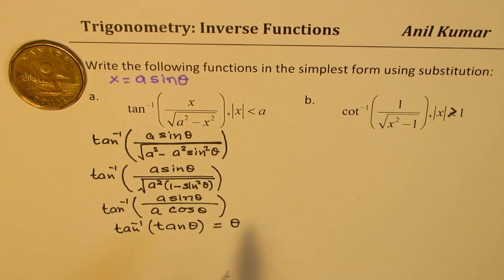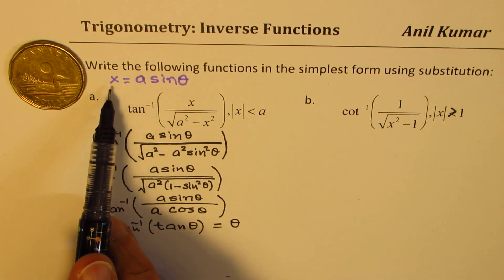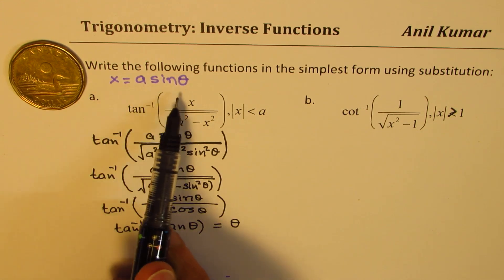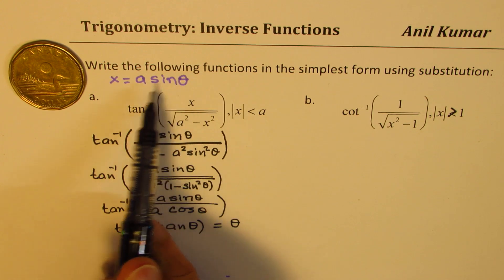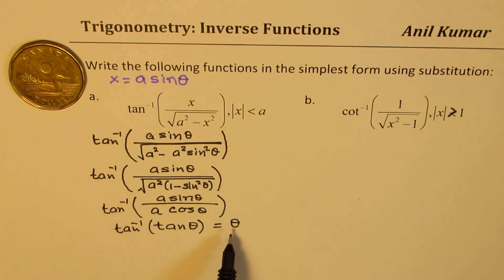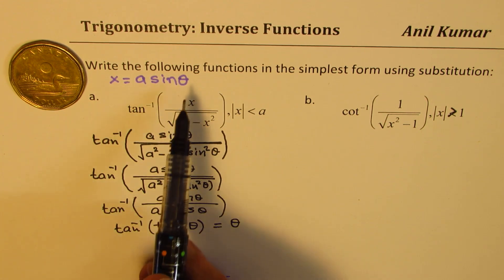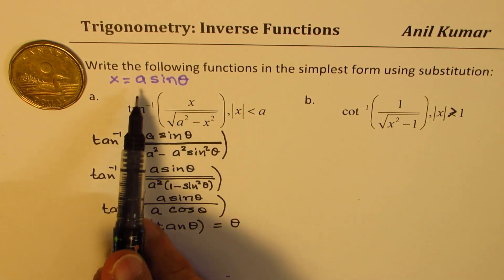So since we get the angle theta as our answer, then what is this theta is going to be. So we have substituted x equals to a sin theta. So we get this equals to theta. So now from here, we could actually write, let's go back to our substitution.